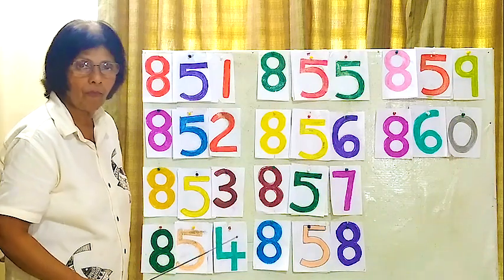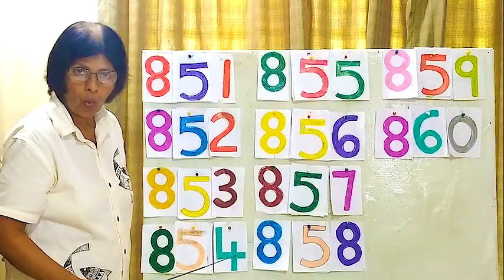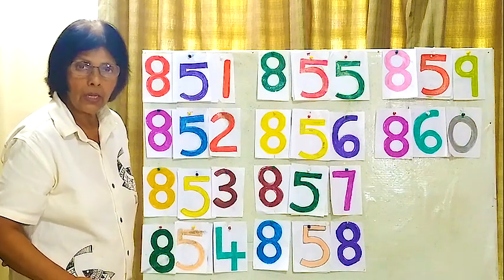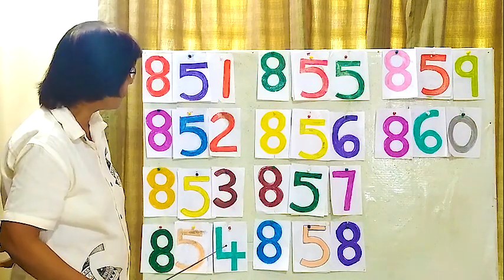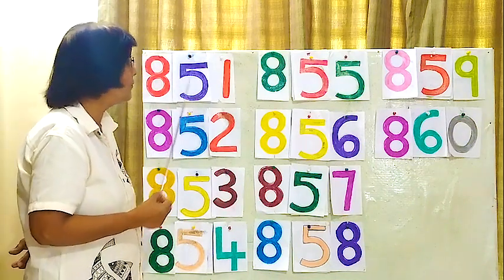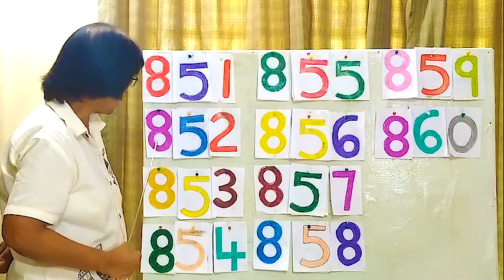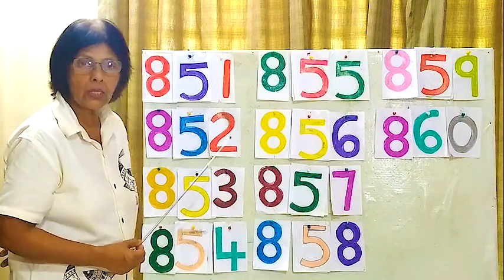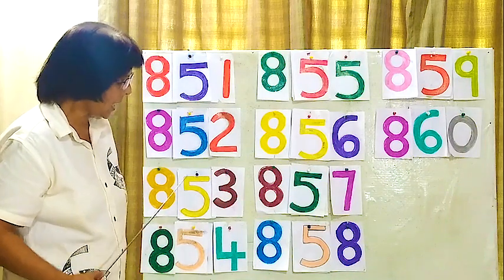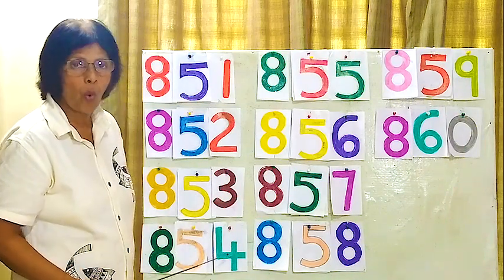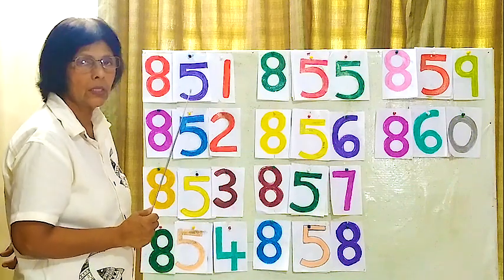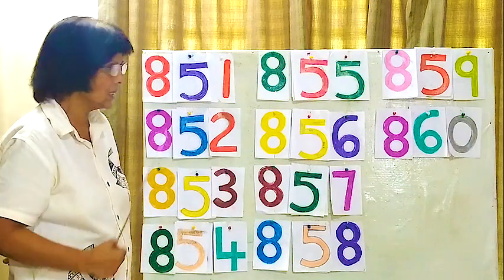854. 854, 854. 851, 852, 853, 854. Now this line, today you are learning all 50s. Right?